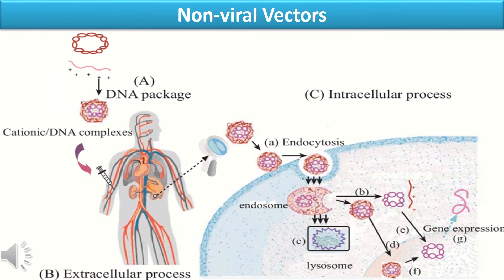For non-viral vectors, a DNA package consisting of the gene of interest with cationic DNA complexes — which neutralize the nature of the genetic material — is directly injected into the bloodstream of the organism. Once it reaches the liver or lungs, it is endocytosed into the cell and takes the form of an endosome. The endosome then enters the nucleus, the biodegradable material is degraded by lysosomes, and the genetic information inside the nucleus is expressed to produce our desired result.